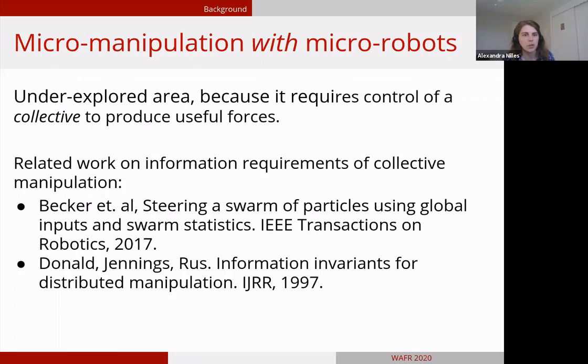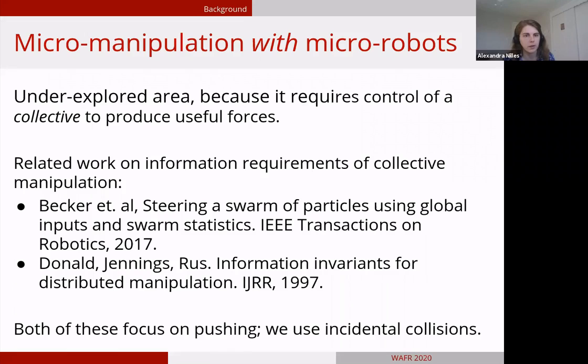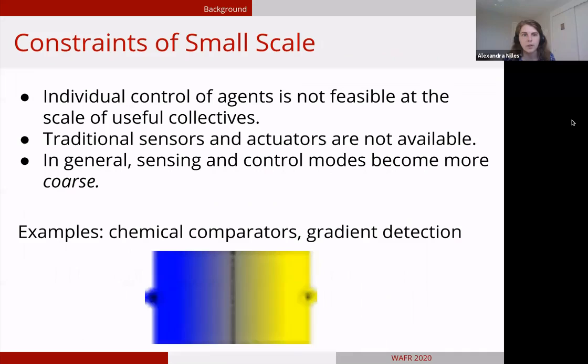At the macro scale, people have been looking into information requirements, like this paper from Donald, Jennings, and Roos in IJRR. It's important to note that both of these highlighted works, and there's more in the paper itself, most of the work out there focuses on pushing objects directly, assuming we can aim the robot at the object and then push it in the direction we want to go. Whereas our work focuses on using incidental collisions and having the object manipulation emerge as a result of the motion patterns of the robots.